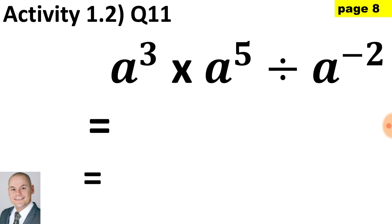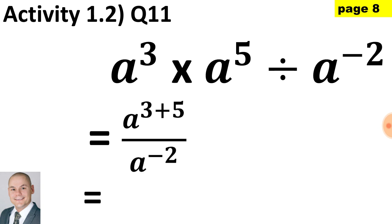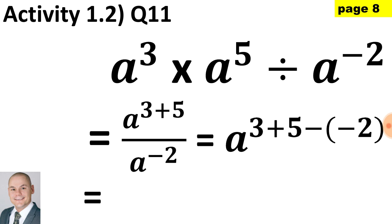In question 11, we have two different applications — a multiplication and a division — so we create a fraction. We have a to the 3 multiplied by a to the 5 above the line, and a to the minus 2 below the line. The bases above the line are the same, giving a to the 3 plus 5 over a to the minus 2. When dividing, we subtract the exponents: 3 plus 5 subtract (−2) gives us a to the exponent of 10.